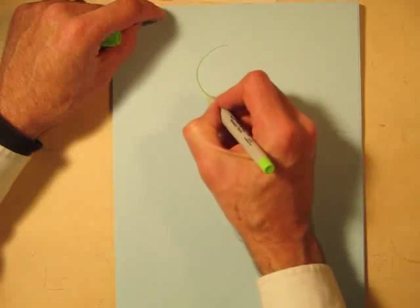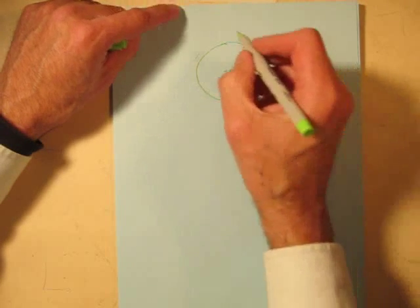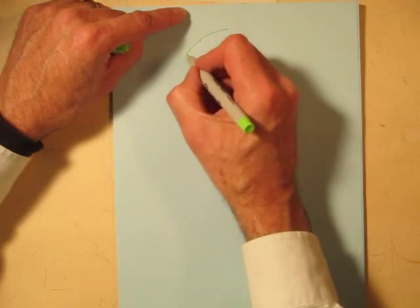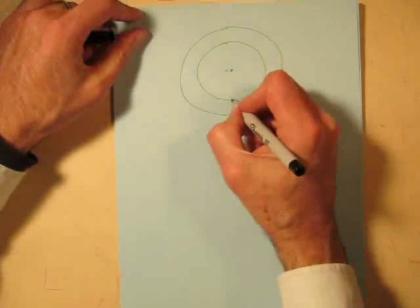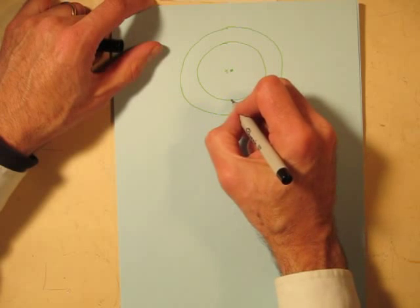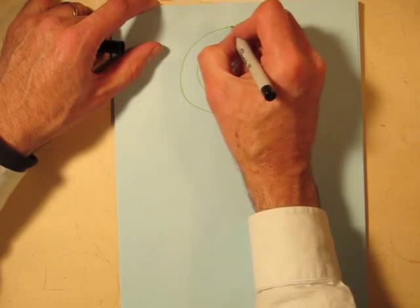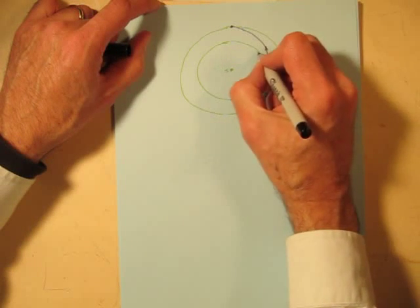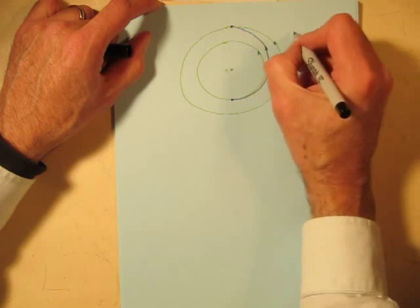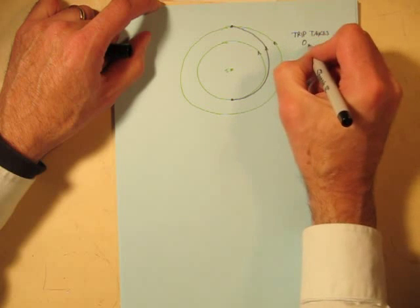Here's the orbit of Earth. There's the Sun in the center. And here's the orbit of Mars. And we are going to fly on a path that goes from here in our Hohmann transfer ellipse up to here. And we know everything is going in this direction. And we know the trip takes 0.7 years.